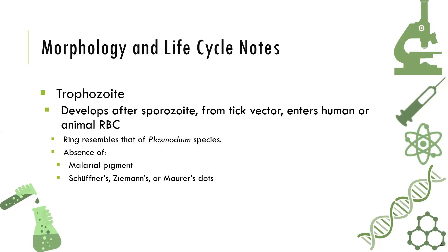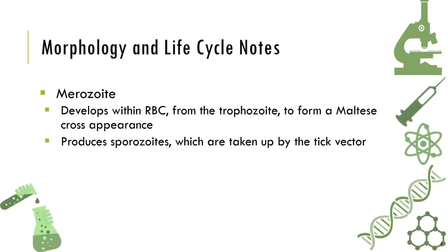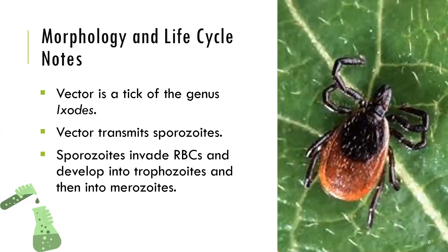The same applies to Babesia species. The merozoites of Babesia develop within the RBC from the trophozoite to form a multi-cross formation, which produces sporozoites that are taken up by the tick vector. The vector of Babesia is the tick, particularly Ixodes.